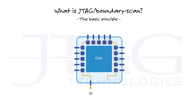With one serial data input pin, which is called TDI (test data in), and one serial data output pin, called TDO (test data out), we can now reach all the pins of a chip through its Boundary Scan Register.